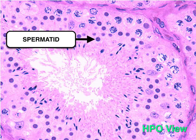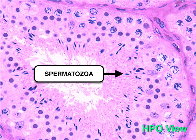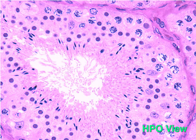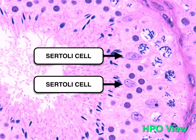Spermatids are found close to the lumen, and their nuclei appear as brown rice grains. The final stage in spermiogenesis is the spermatozoa. The germinal lining also contains Sertoli cells, characterized by long angular nuclei. These are the supporting cells which make up the blood-testis barrier and secrete the hormone inhibin.